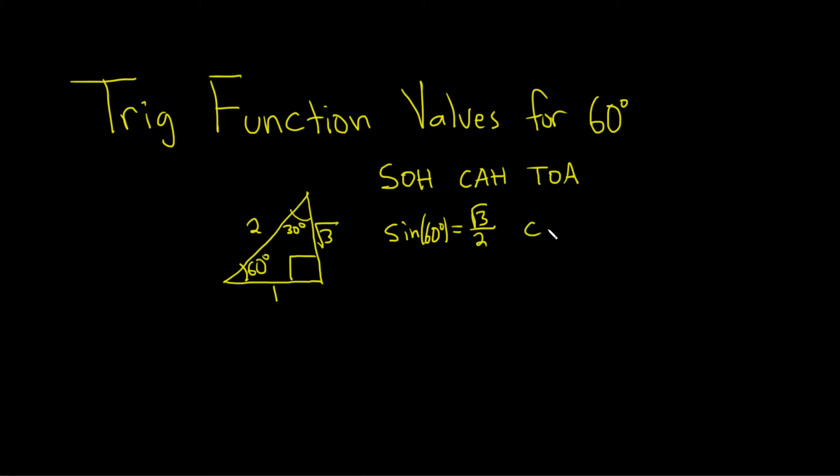How about cosecant of 60? Well cosecant of 60, that's the reciprocal of sine. So you just flip this one. So 2 over square root of 3. Once you have the sine function you can find the cosecant just by flipping it. And you can rationalize if you want, but I'll leave it.